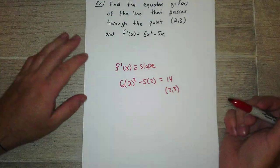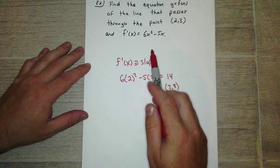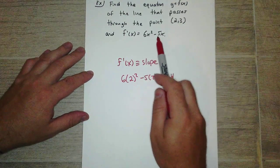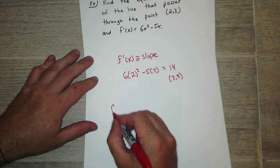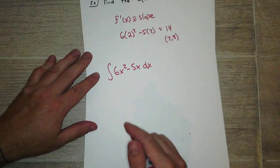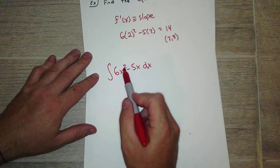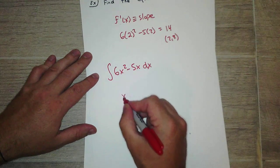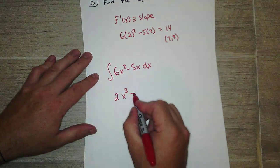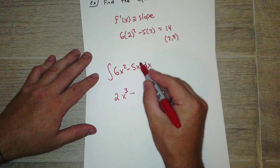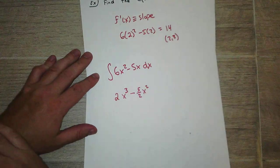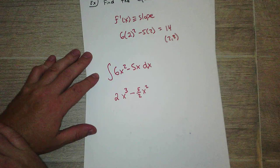But the other way to do it using derivatives, is basically we don't even need this point. We can just integrate this to get the equation of the line. So integrate each term separately. Add 1 to here, that gives us a 3. Then I divide 6 by that 3, so that gives me a 2. Minus. My exponent here is 1, so I add 1, that gives me x squared. And then I divide by 2. So I get that. So that's pretty much y.